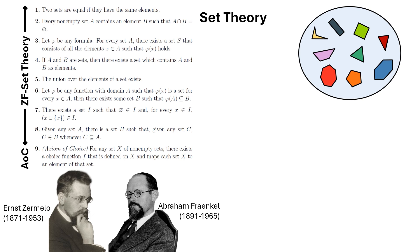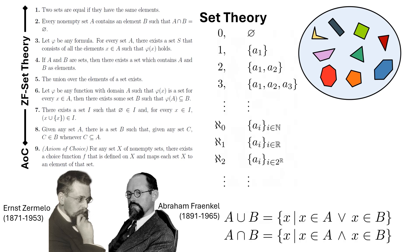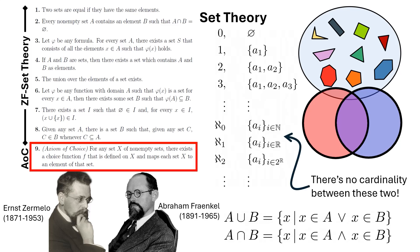Important ideas in set theory include the intersection and union of sets, cardinality, infinity, Venn diagrams, functions between sets, the axiom of choice, and the continuum hypothesis.